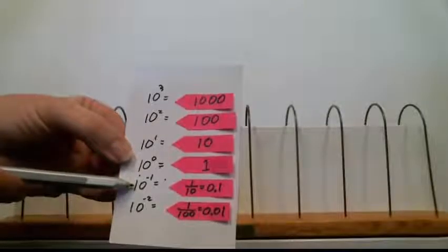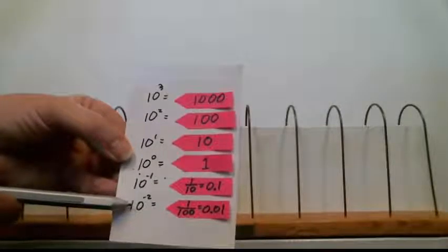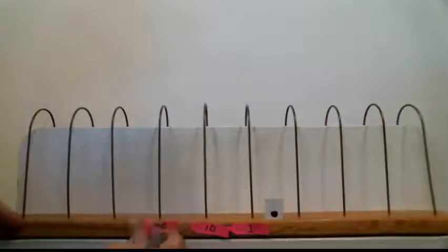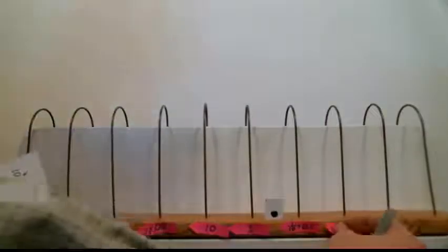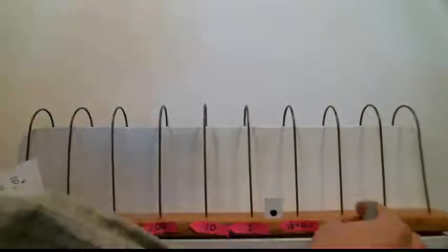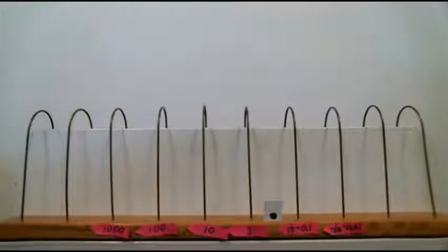And lower we go 10 to the negative 1, which is 1 tenth, and 10 to the negative 2. So I have to decide which of these wires I'm going to put these on. We use the decimal point to specify the difference between the whole number part and the fractional part. So let me just label these things now.